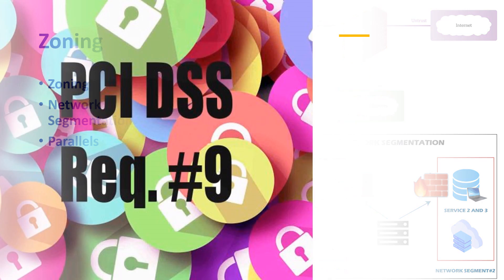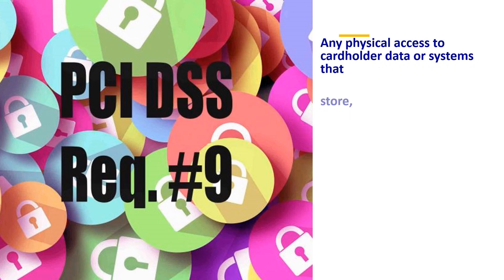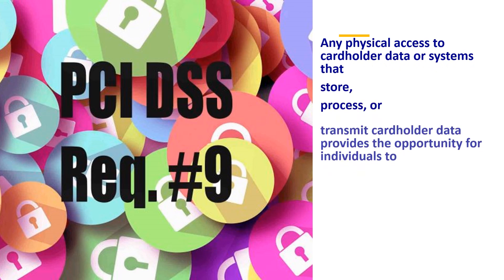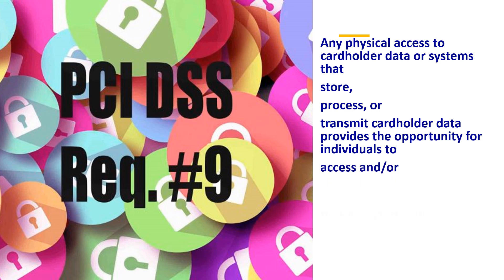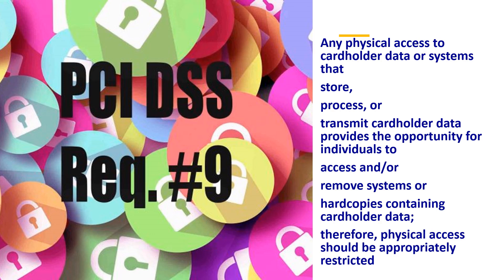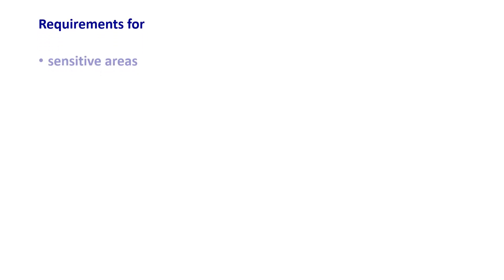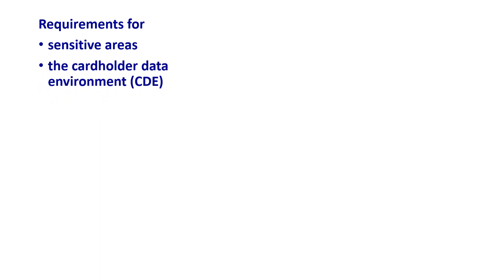Unraveling PCI DSS Clause 9: let's dive into the specifics of PCI DSS V4. On page 109, PCI DSS V4 states: 'Any physical access to cardholder data or systems that store, process, or transmit cardholder data provides the opportunity for individuals to access and/or remove systems or hard copies containing cardholder data. Therefore, physical access should be appropriately restricted.' This breaks down into three areas: requirements for sensitive areas, requirements for the cardholder data environment (CDE), and requirements for the facility.